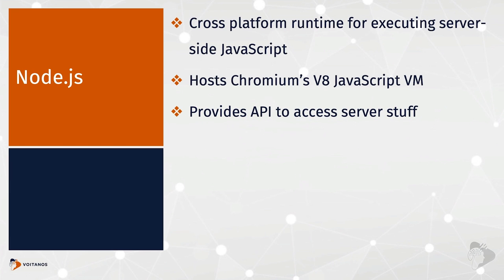Node is a cross-platform runtime that enables developers to create applications written in JavaScript that run on servers, desktops, laptops, embedded devices, and more. It does this by hosting the Chromium Project's V8 JavaScript engine — the same engine that Google's Chrome and Microsoft's latest Edge browser are both based on. It also includes APIs for interacting with the local device for things like IO, environment variables, and networking.